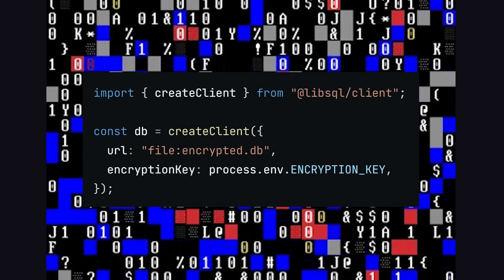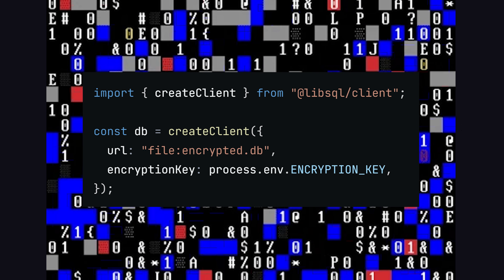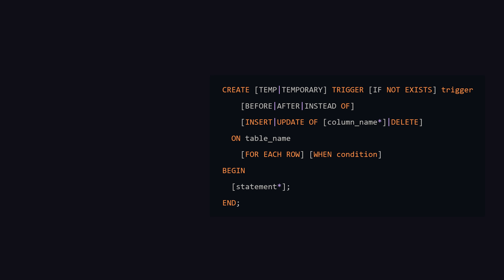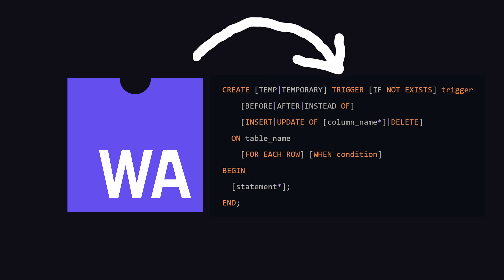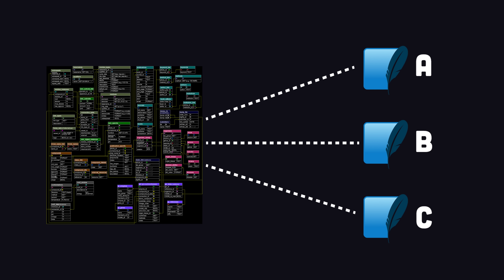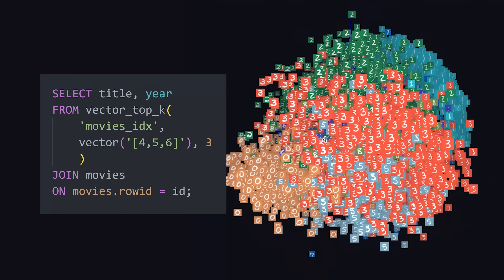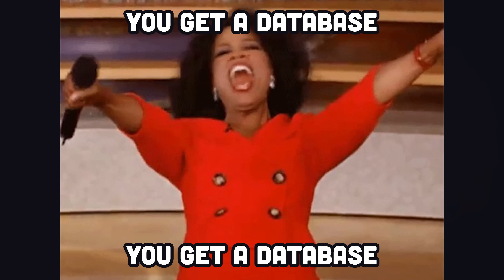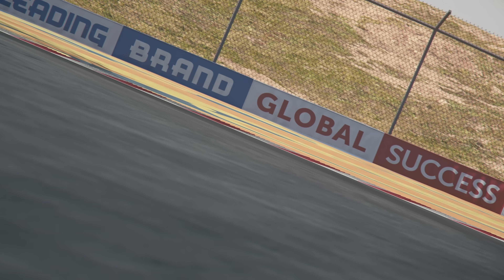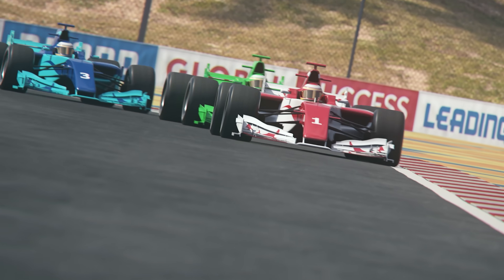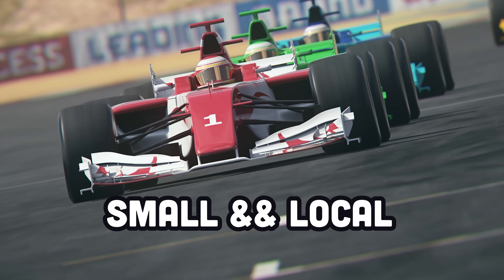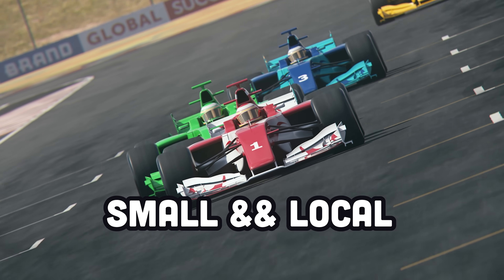In addition, it adds features like encryption at rest, to the disappointment of hackers. It adds WebAssembly triggers to run code when events happen in the database. It can share a single schema across multiple databases, and can even do vector queries for AI applications. When you combine these features to give every user a unique database, it opens the door for better performance — not only is the database size kept very small, but it can be served from a location near the user.